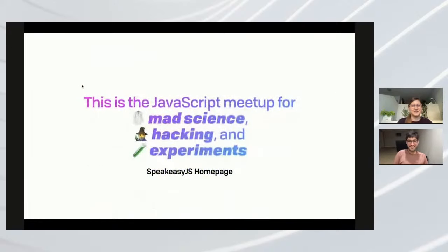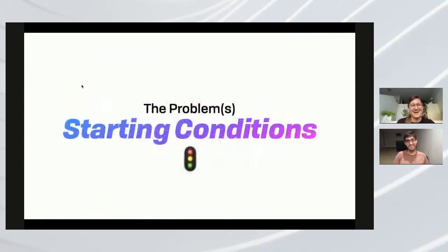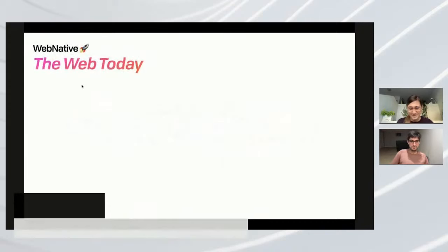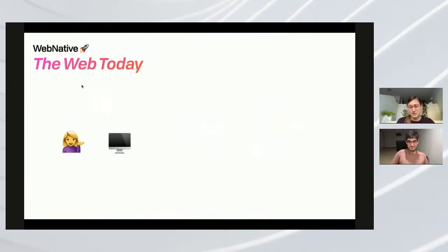This is the JavaScript meetup for mad science, hacking, and experiments — and I realized this is an 'and' not an 'or,' so we have all three covered. The web today really came from the late 80s and early 90s and has some assumptions built into it. We have a user with a machine, the browser isn't that powerful, and we put data in some shared space somewhere else. To connect to that over the internet, we need to put a server in front of the database.